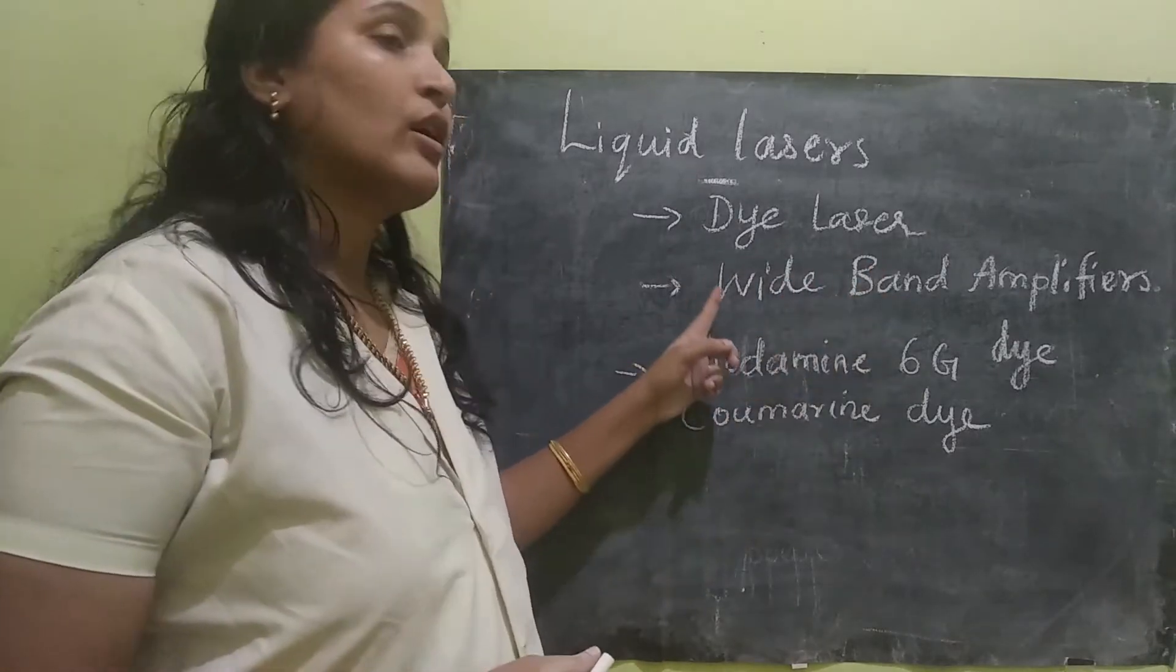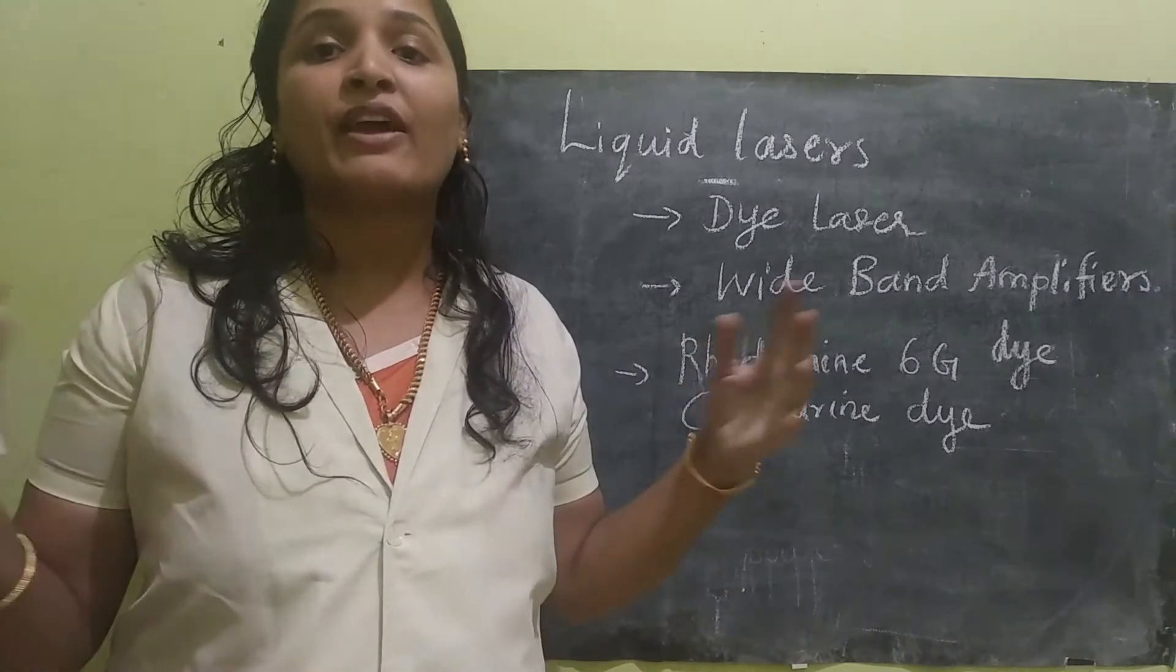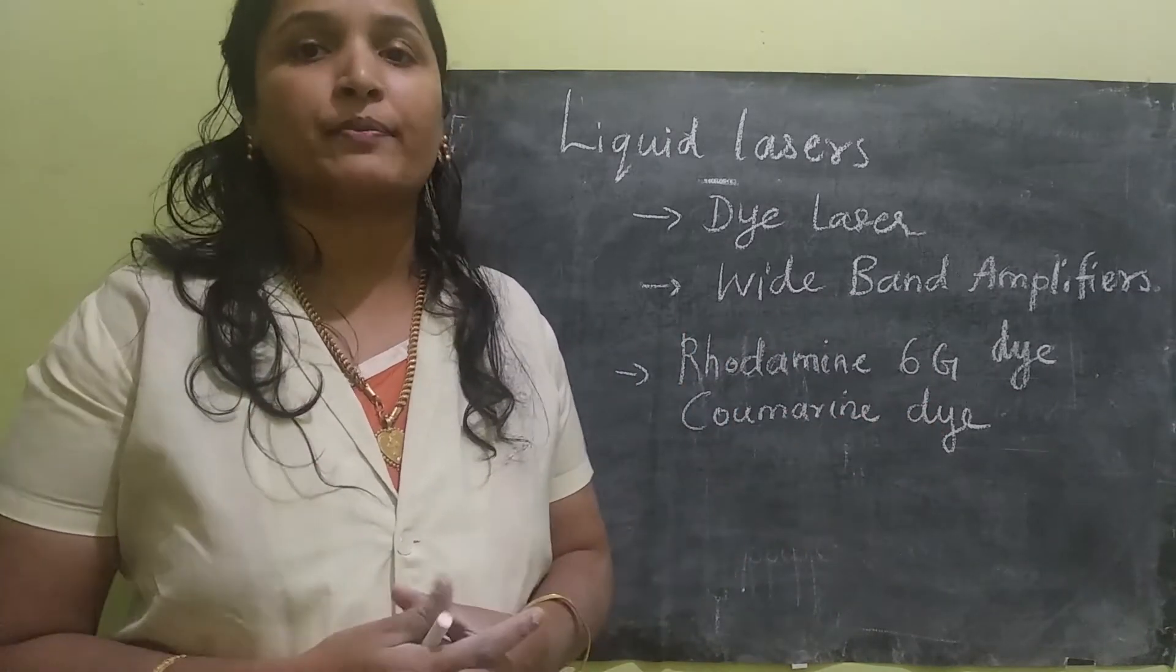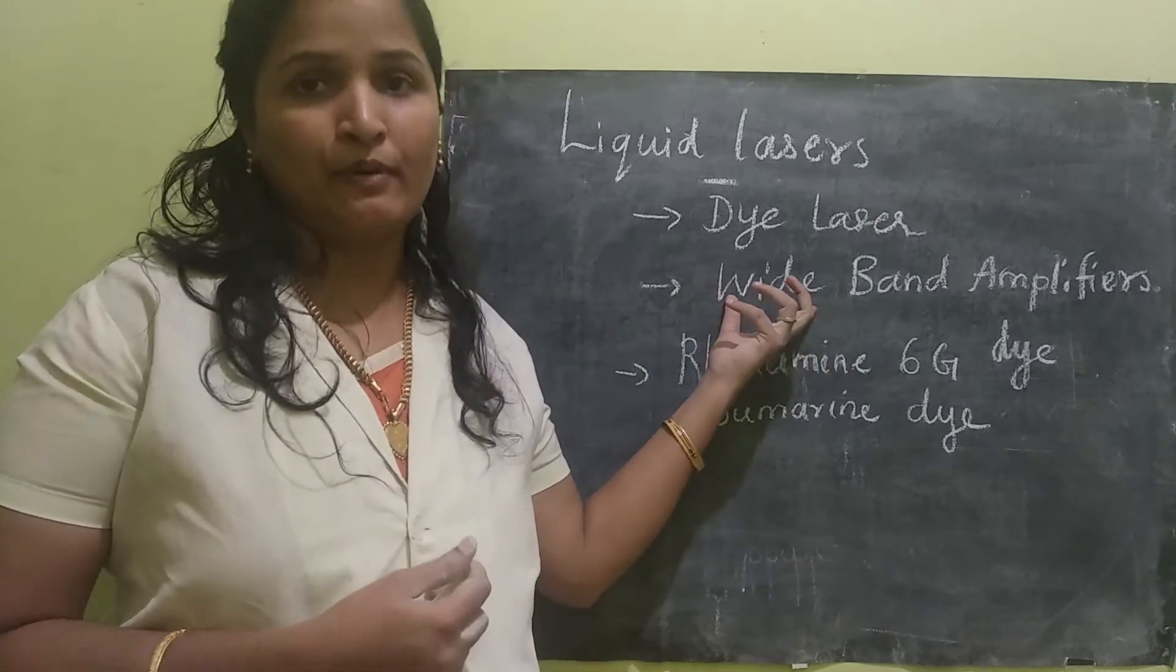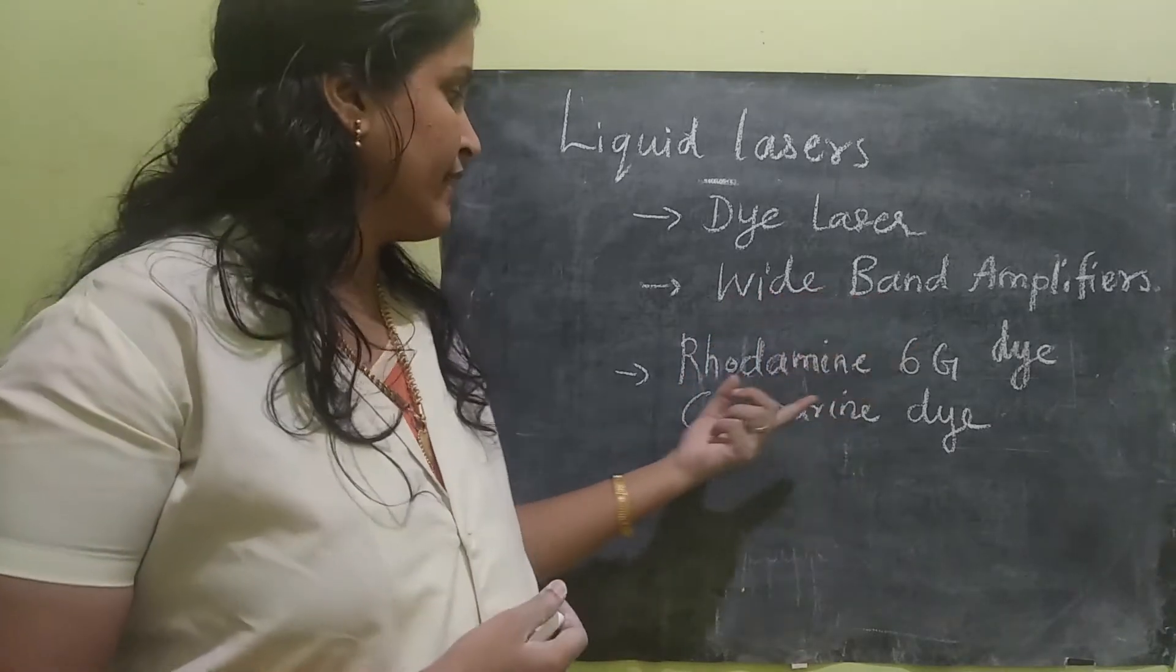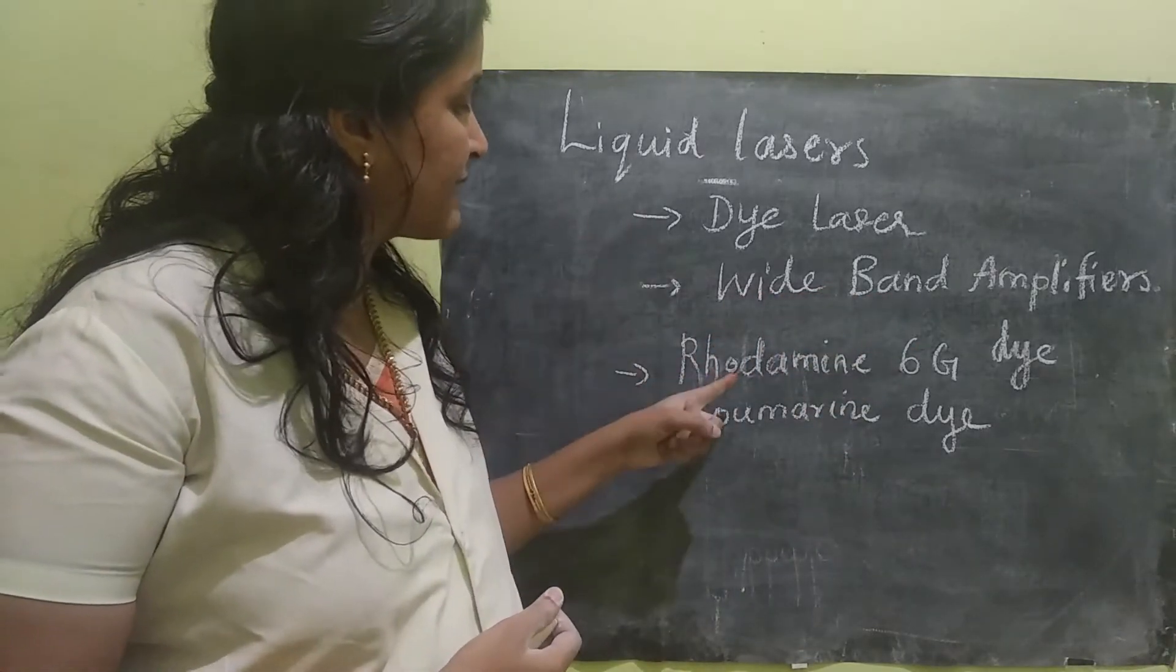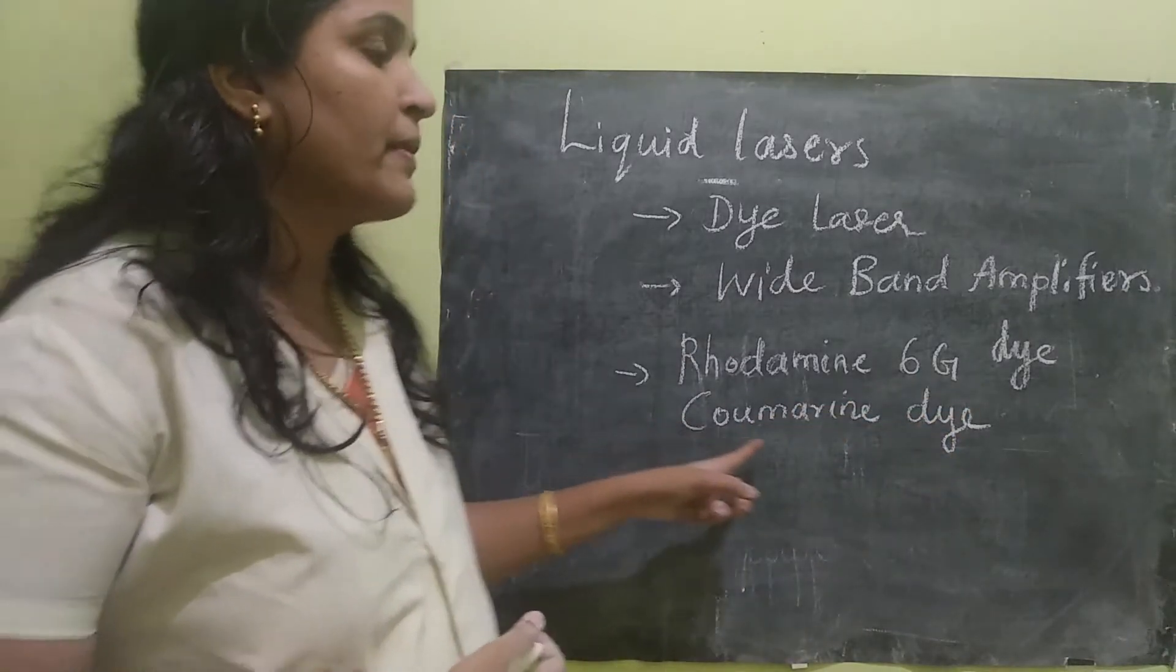It is otherwise called as wide band amplifier. The reason is the wavelength here is very broad. The wavelength used in this laser is very large, so that is why it is called as wide band amplifier. Some examples of dye laser are rhodamine 6G dye and coumarin dye.